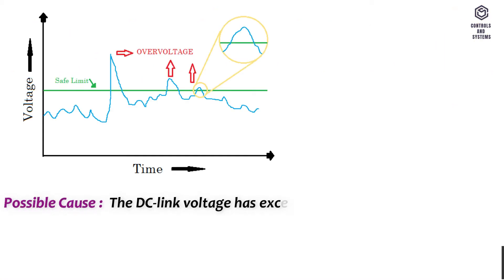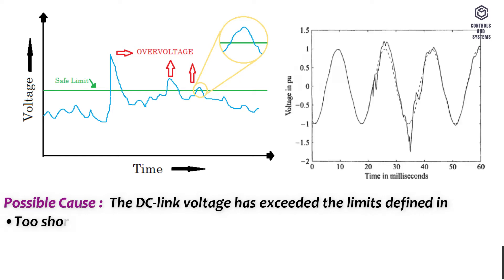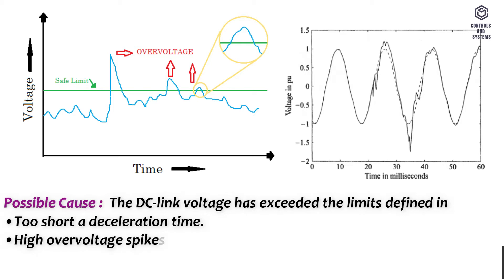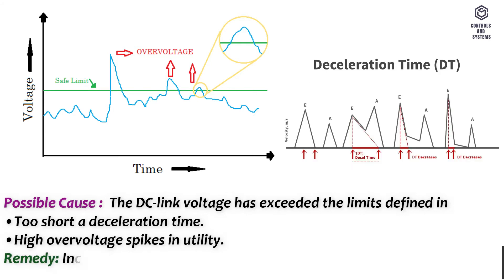Fault code 2 – Overvoltage. Possible cause: the DC link voltage has exceeded the defined limits due to too short a deceleration time or high overvoltage spikes in the utility supply. Remedy: increase the deceleration time.